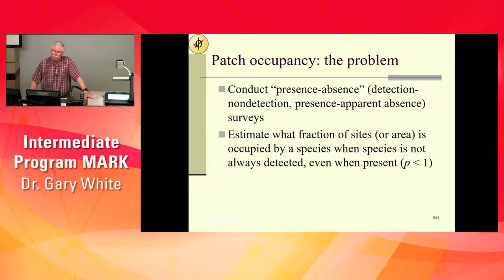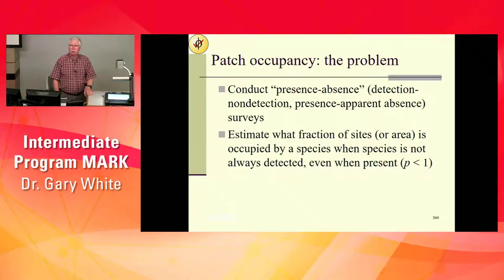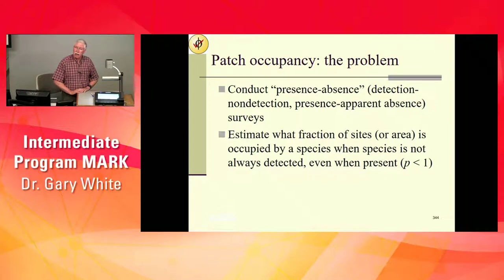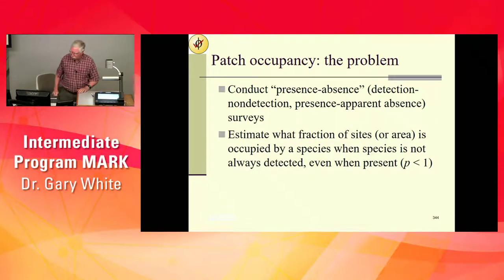So you've got this detection problem. One of the key assumptions is that we do not have false detections. There are models that allow false detections now, but those create a really big mess. The errors in your data — not really errors — are the fact that you surveyed and there were prairie dogs there and you missed them. So presence-absence — that's what we're doing here.